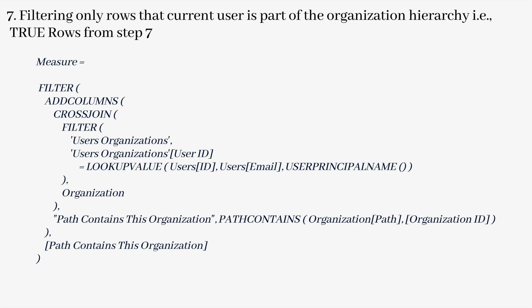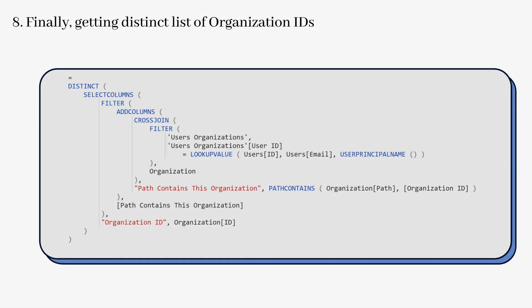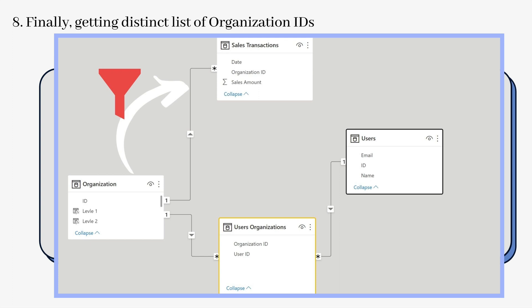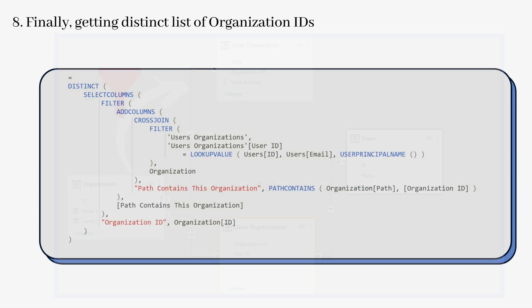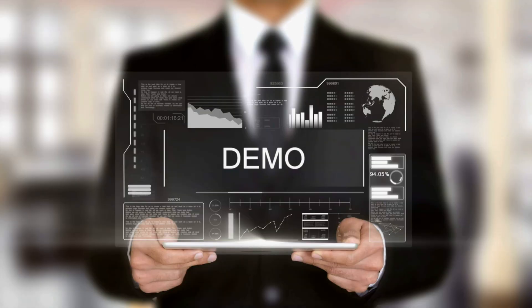In the last step, we find the distinct list of organization IDs so that those organization IDs can help us filter the sales transaction table. Basically, you have to find the organizational IDs corresponding to the user who is logged into the Power BI service account, and those organization IDs will filter your sales transaction table. I know it's a lot to digest, but please pause this video, have a look at the DAX expressions, and if you have any questions, put them in the comment section.